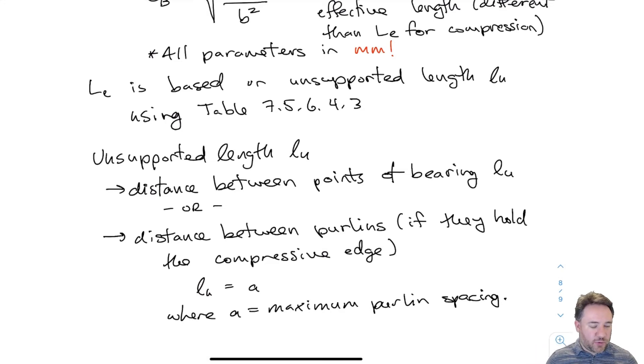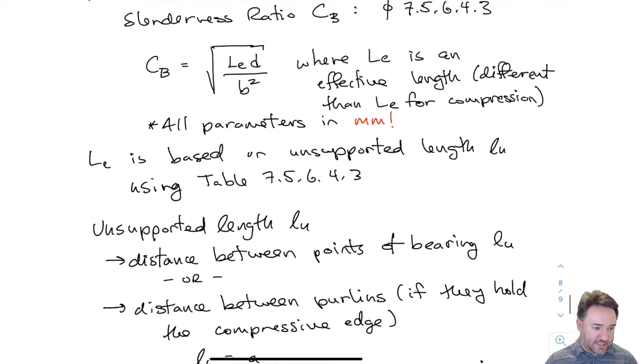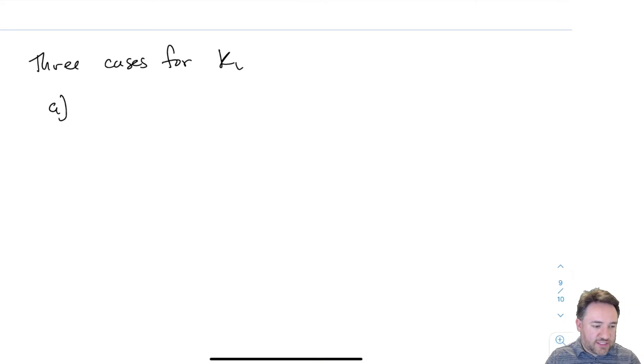Now that we know how to calculate unsupported length, therefore LE from Table 7.5.6.4.3, and therefore CB from bottom to top, we can calculate KL. KL has three different cases depending on the buckling mechanism we're experiencing. For a short section with low slenderness, the beam likely won't fail by lateral torsional buckling but by crushing of the top or tension failure of the bottom. For those cases, we don't have buckling, so KL equals one.